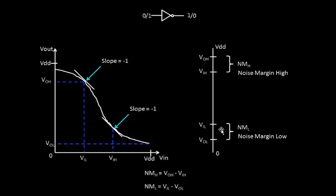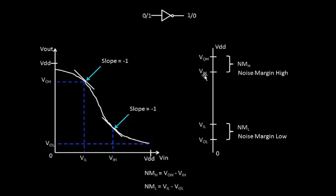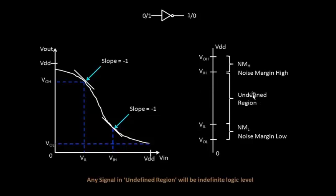That's why noise margin is a pretty important topic — we will be determining the voltage levels of the bump, and based on those levels we will determine whether a particular bump is harmful or can be ignored. There are other factors too, like noise width, which we will learn in upcoming videos. Noise margins are nothing but the tolerance levels of noise. Looking at the region between VIH and VIL — this is the undefined region.